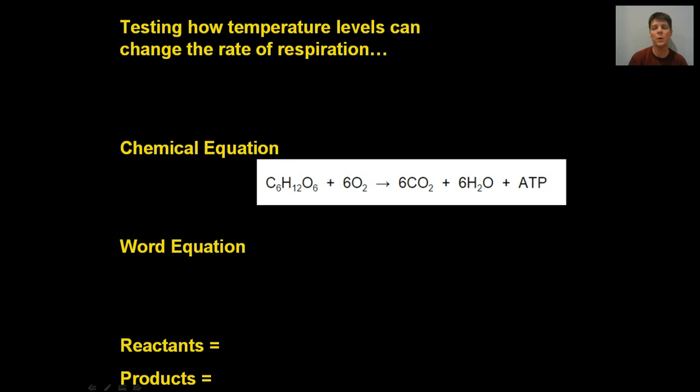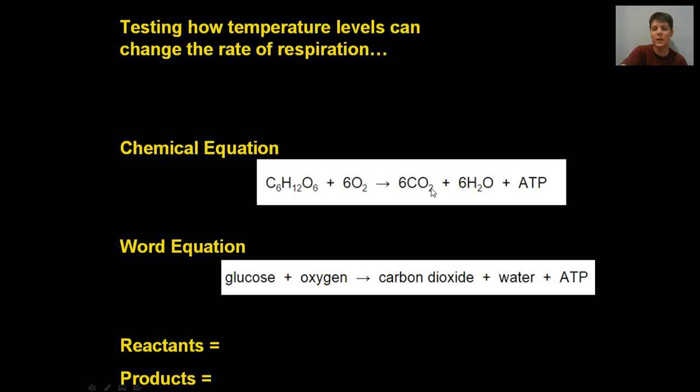We have C6H12O6 plus 6O2 produces 6CO2 plus 6H2O plus ATP. The word equation for this reveals the reactants are glucose plus oxygen. The products are carbon dioxide, water, and ATP.